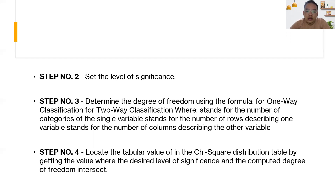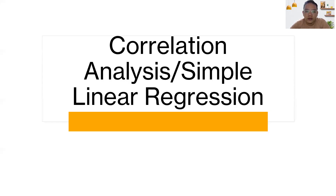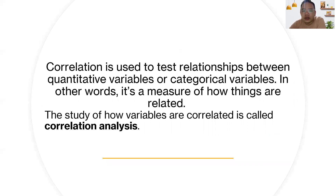Step number four: locate the tabular value in the G-square distribution table by getting the value where the desired level of significance and the computed degree of freedom intersect. Now, the types of data enumeration include correlation analysis and simple linear regression. Correlation is used to test relationships between qualitative variables or categorical variables — in other words, it's a measure of how things are related. The study of how variables are correlated is called correlation analysis.